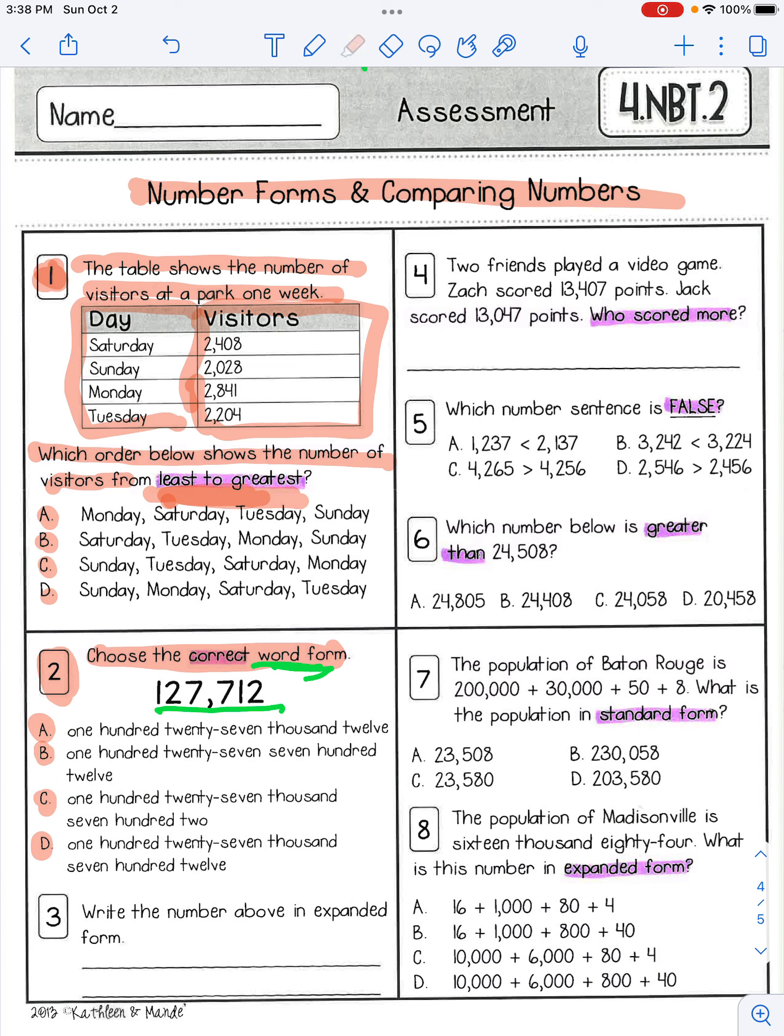For number three, you're going to write the number above in expanded form. So that means this number, you're going for number three, you're going to write it in expanded form. So this number, you're going to put that number there in expanded form.